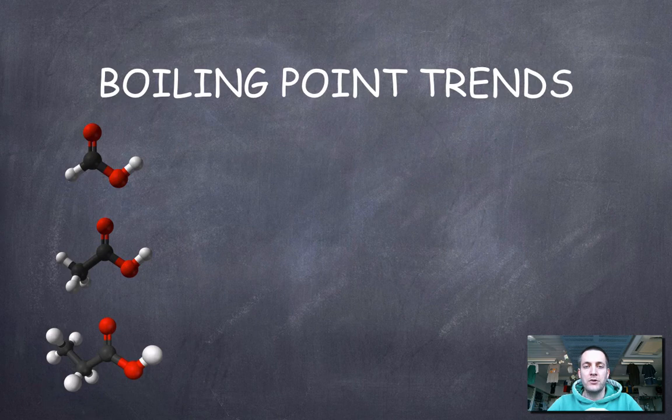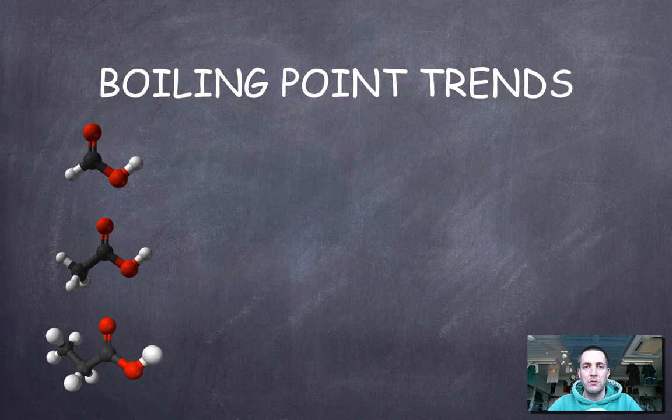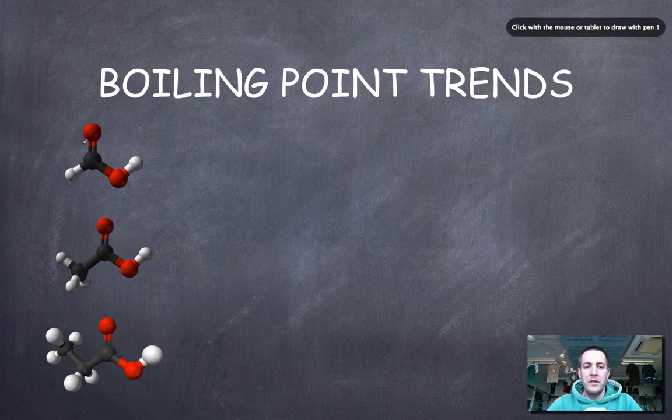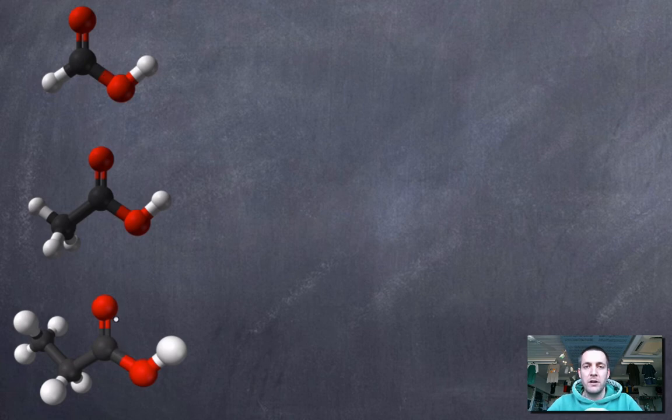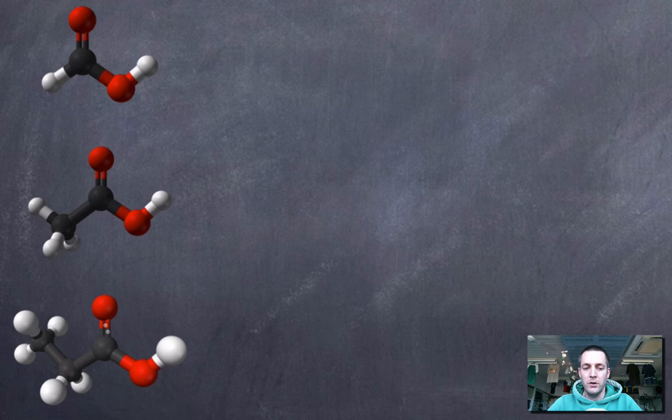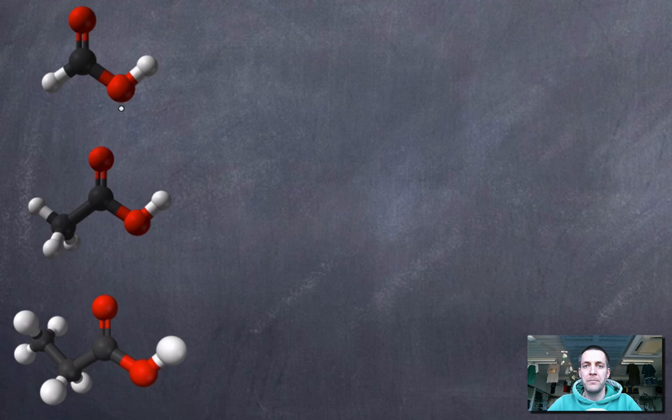Now, boiling point trends, this should be quite simple to explain if you remember something about intermolecular forces from the bonding topic. If you don't, it might seem a bit alien to you. But I've got three carboxylic acids here, which I actually showed you earlier. These are three members of the carboxylic acid homologous series because one's got one carbon, the next one's got two, the next one's got three, but they've all got this feature at the end of them.